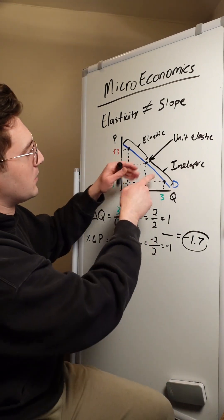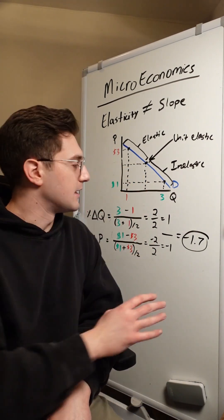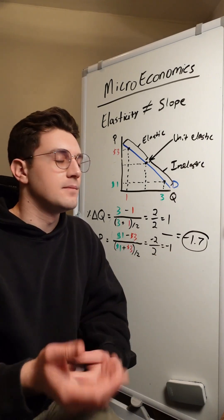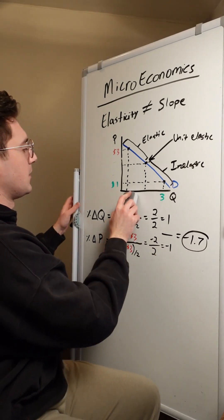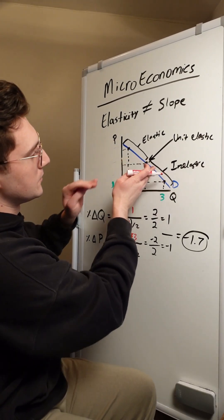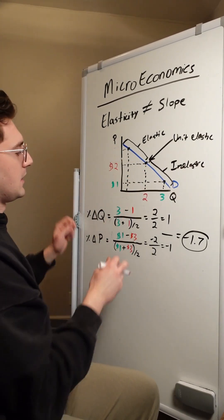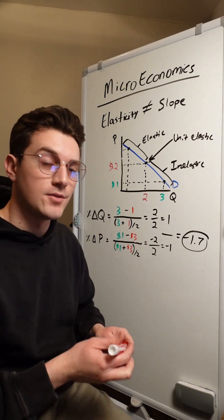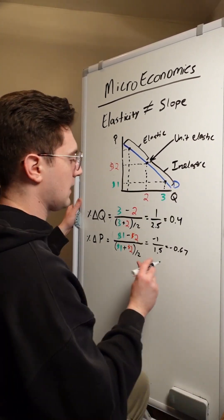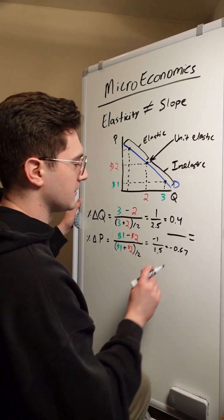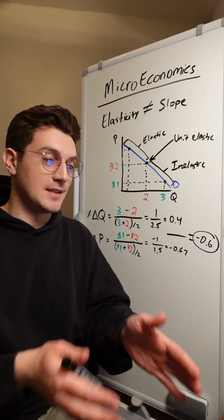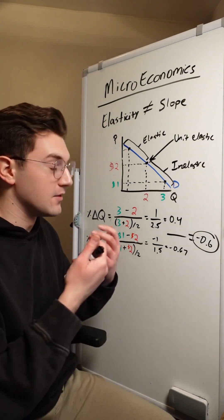Now let's do this with our midpoint falling in the inelastic region. To be clear, our price elasticity of demand value should be greater than negative 1 but always negative, so between negative 1 and 0. I'll move the red point so the midpoint between the two falls in the inelastic region, then update the formula values and solve. I get negative 0.6 as my price elasticity of demand, which falls in the mathematical range of inelastic demand.